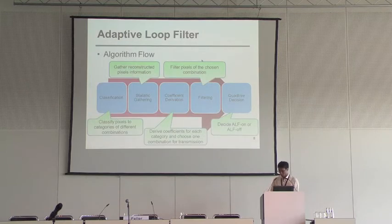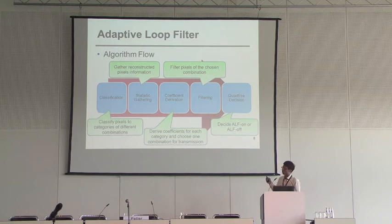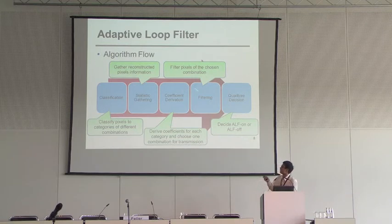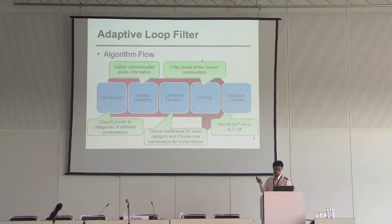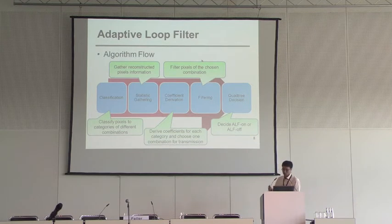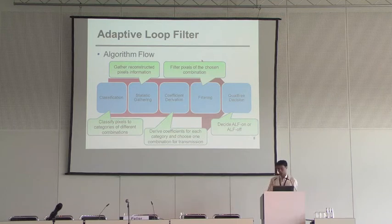Here is the adaptive filter algorithm. First, we classify the pixels into different categories. Then, we gather the statistics of these pixels. We use this information to derive coefficients, and we do filtering, and in the end, we do some on/off decisions.